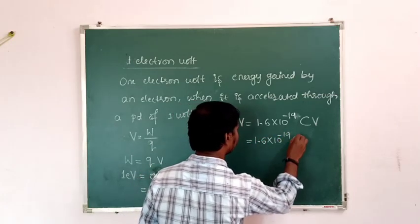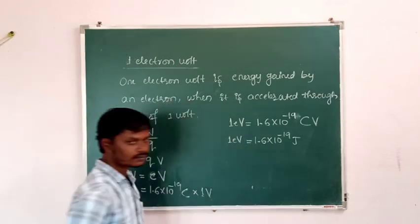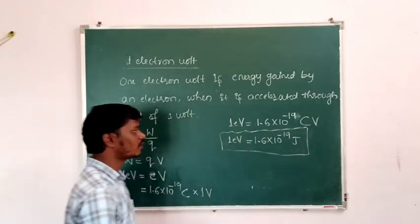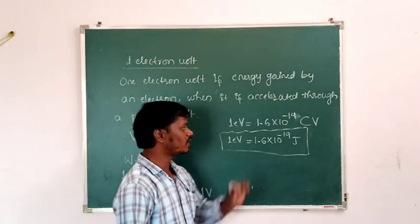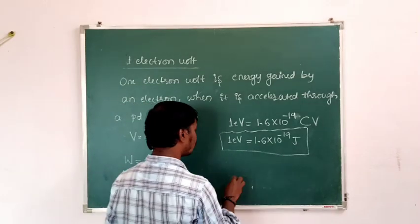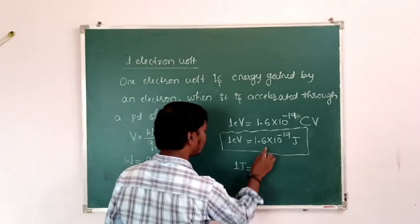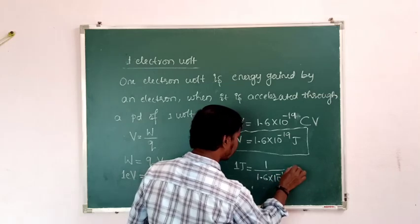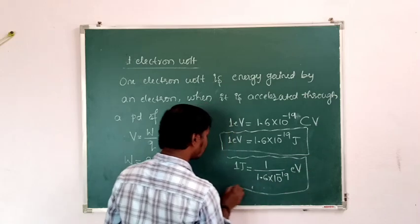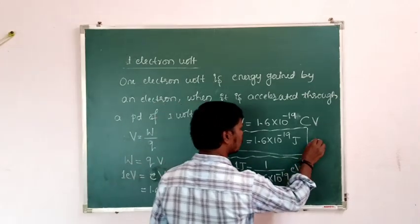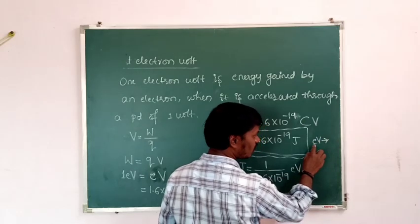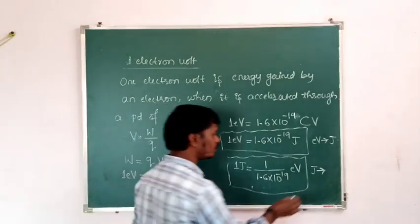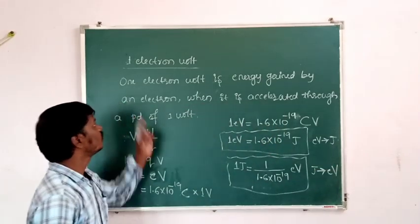So one electron volt = 1.6 × 10⁻¹⁹ joules. To convert electron volt to joule, multiply by 1.6 × 10⁻¹⁹. To convert joule to electron volt, 1 joule = 1 / (1.6 × 10⁻¹⁹) electron volts. Use the first formula when converting electron volt to joule, and the second formula when converting joule to electron volt.